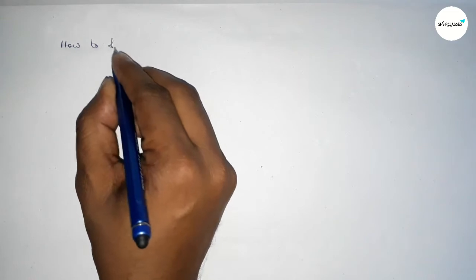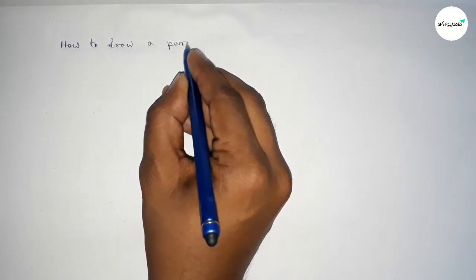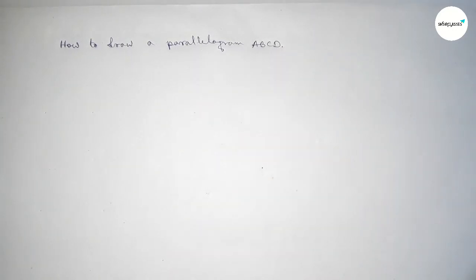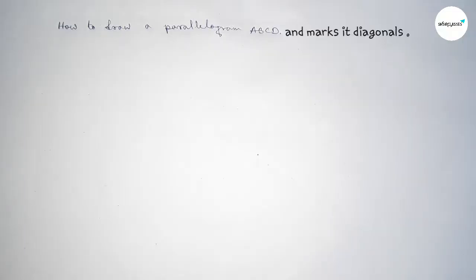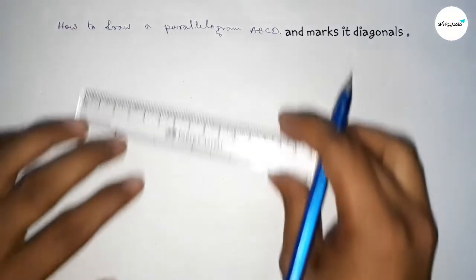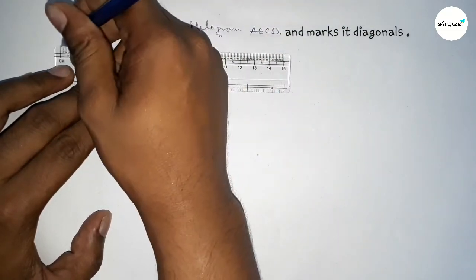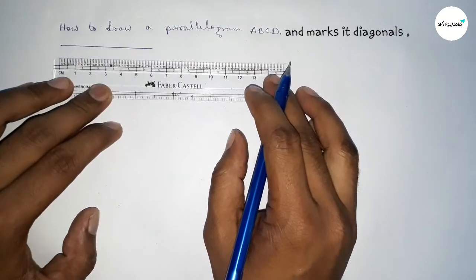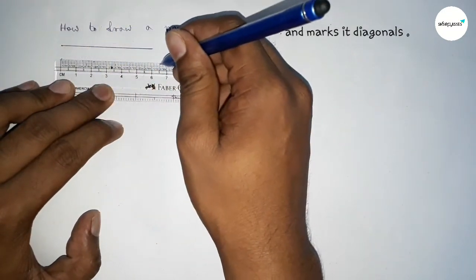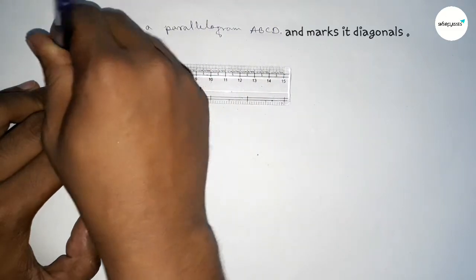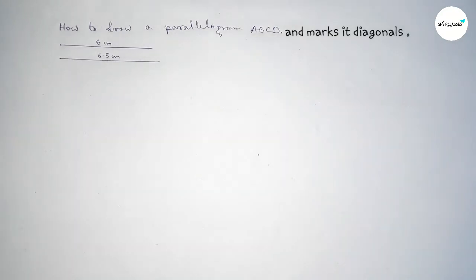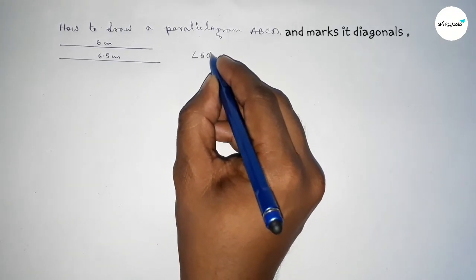Hi everyone, welcome to SI Share Classes. Today in this video we have to construct a parallelogram and mark its diagonals by using a compass. First, we will draw two sides of the parallelogram: one of length 6 centimeters, another of length 6.5 centimeters, and take an angle of 60 degrees.